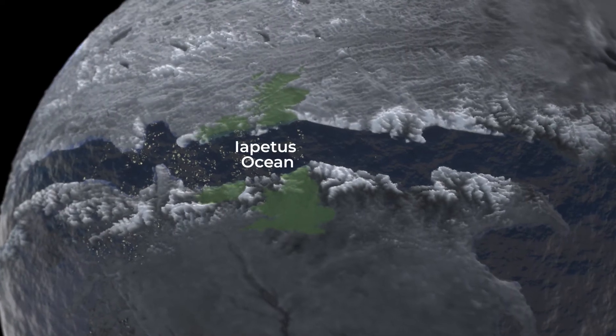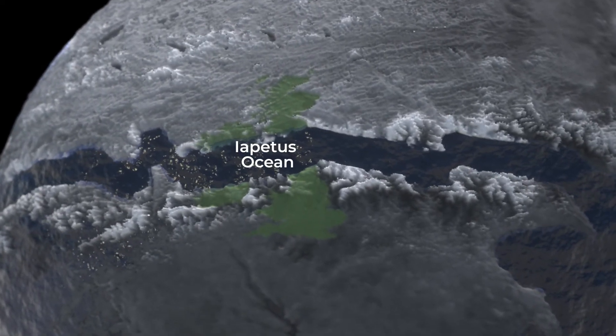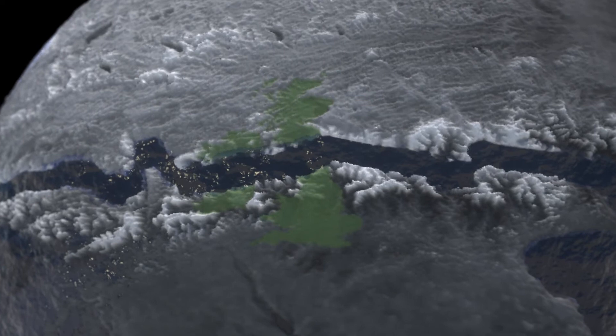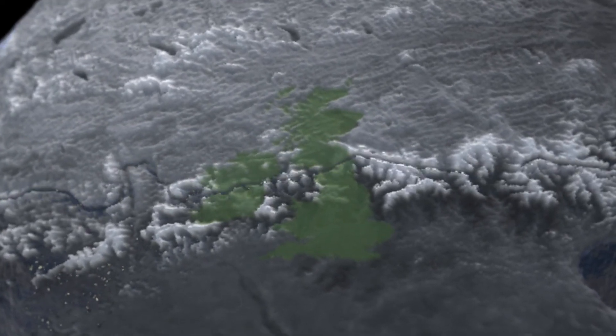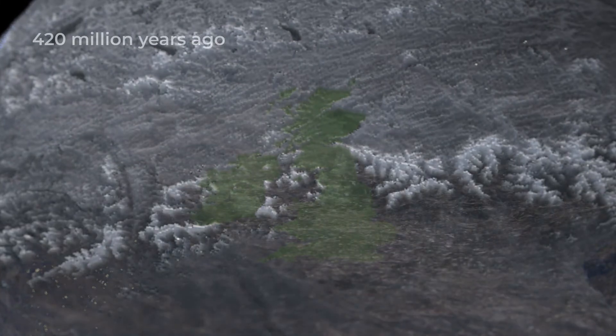When the Iapetus ocean finally closed it brought northwest Ireland on Laurentia and southeast Ireland on another continent called Gondwana together forming the island of Ireland.